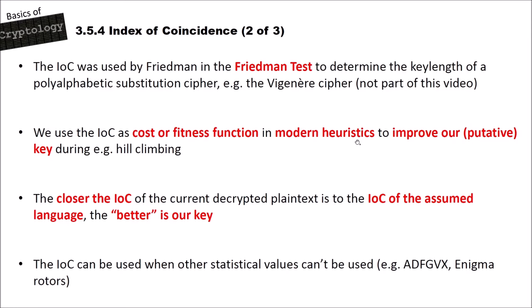For example, in hill climbing we randomly choose a key, decrypt our ciphertext, then compute the index of coincidence of this decrypted text. We then change the key, decrypt again, and compute the IOC again. We compare whether the IOC came closer to the IOC of the assumed language, such as English. The closer the IOC of the current decrypted text is to the IOC of the assumed language, the better the key. The final correct key should have the IOC closest to the language IOC. This works best with longer texts — the more letters you have, the better the IOC performs.